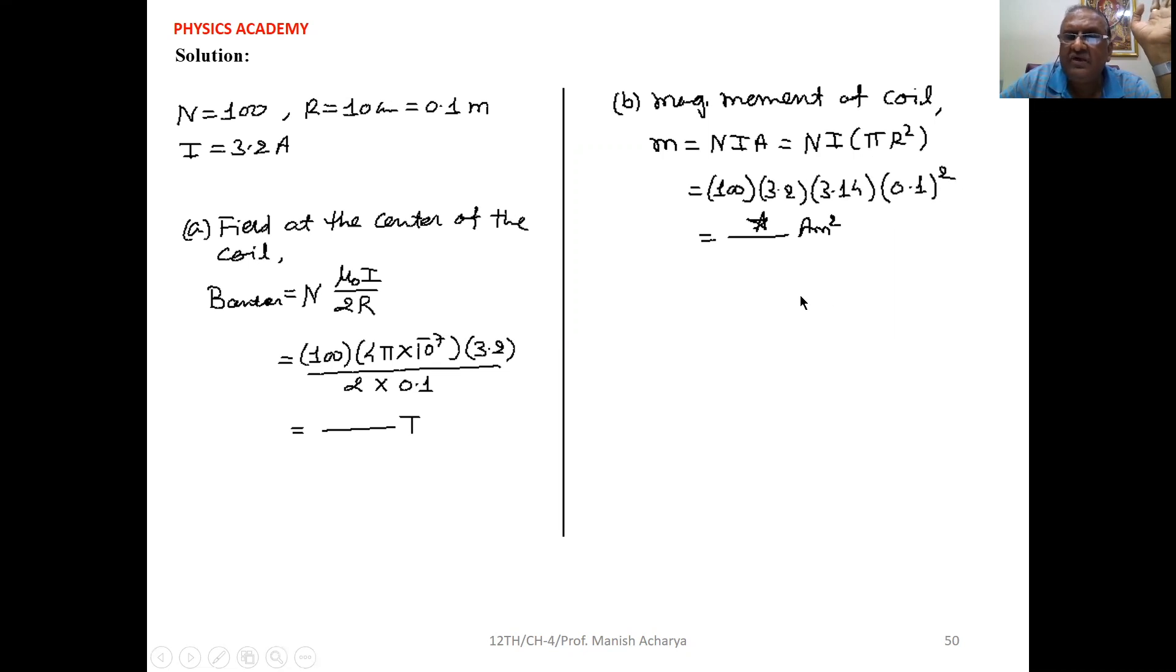π is 3.14, R is 0.1 squared. Solve it and you will get the magnetic moment of the coil. Clear up to this one.